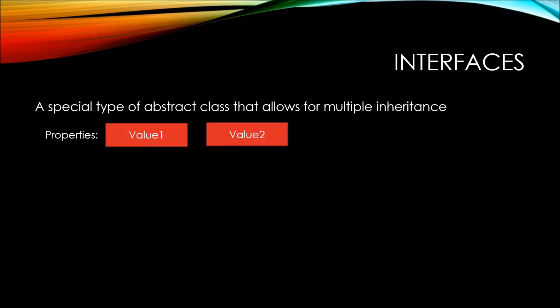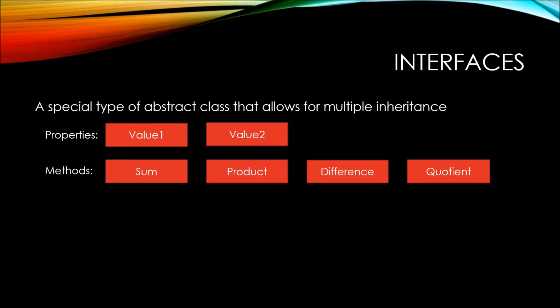Let's say that we have two interfaces, one called value1 and one called value2. Each of these defines a property — one is value1 property, one is value2 property. Each interface only shows one thing to inherit. Now let's say we have four other interfaces, each one defining a method: one that defines sum, one that defines product, one that defines difference, and one that defines quotient.